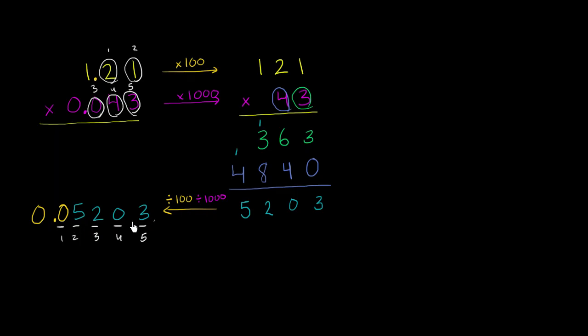So divide by 10, divide by 100, divide by 1,000, divide by 10,000, divide by 100,000. Either way, we are done. This is what we get.